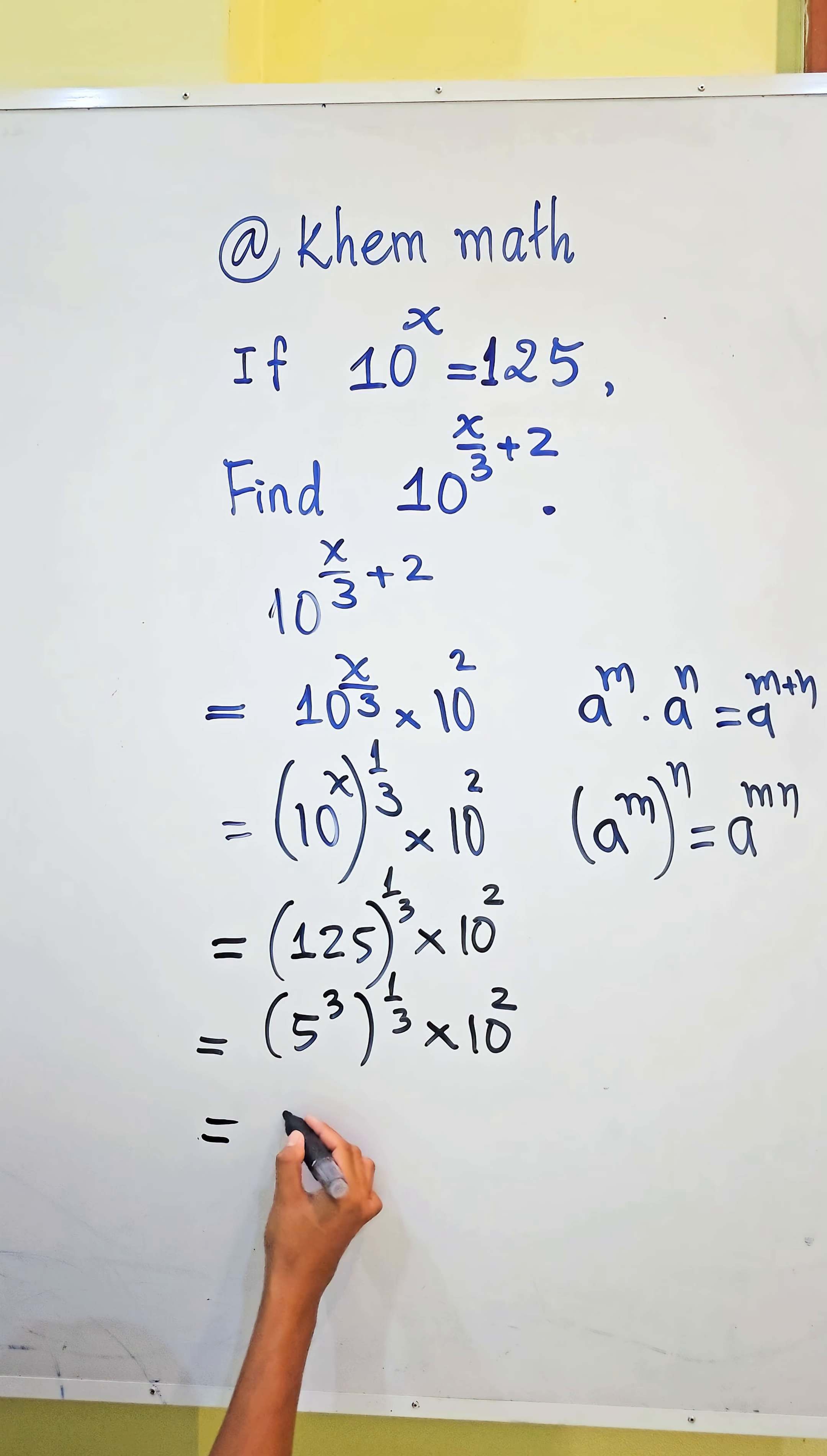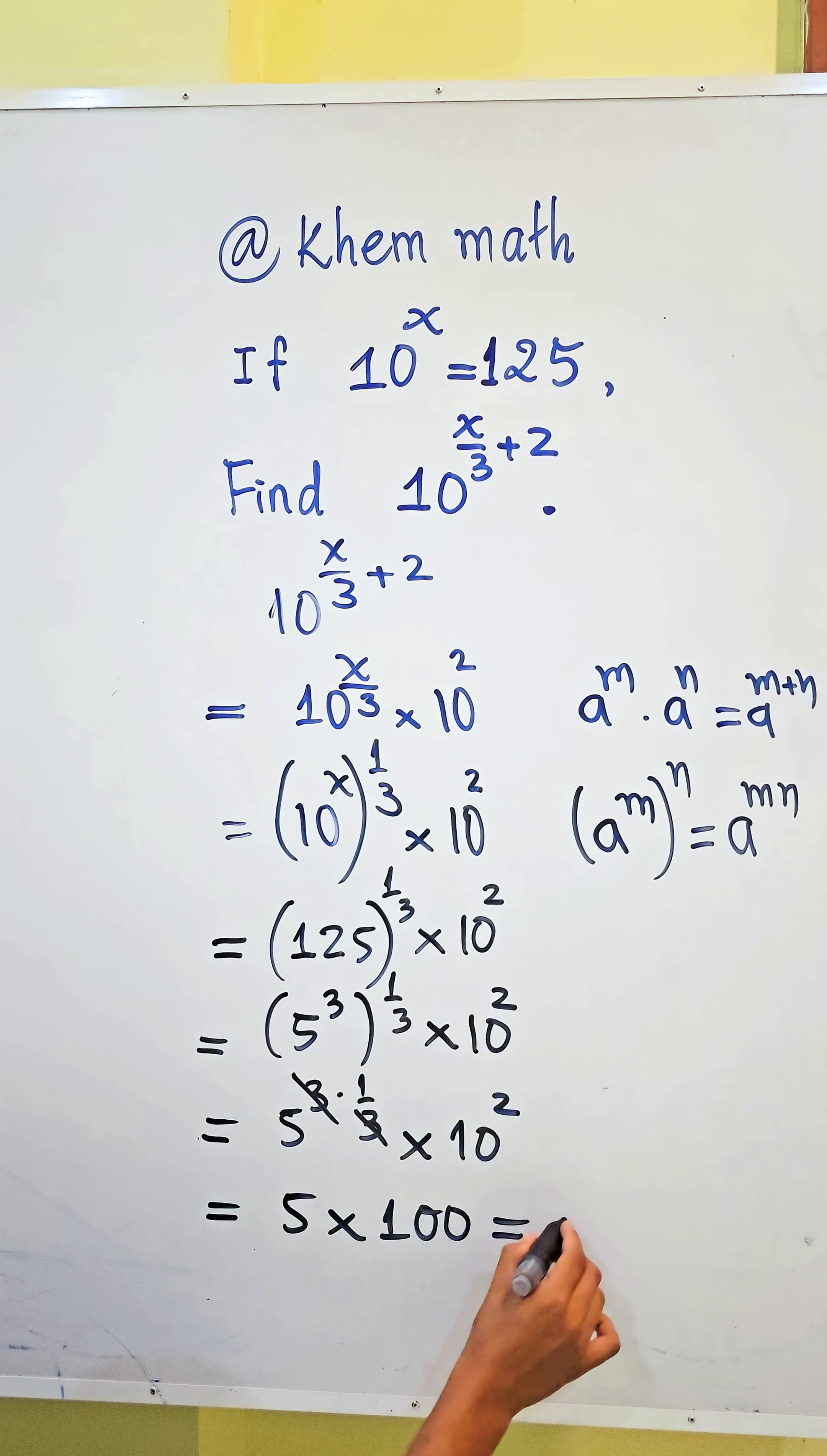We get it's equal to 5 power 3 times 1 divided by 3, times 10 squared. We simplify the 3, we get 5 times 10 squared. 10 squared equals 100, and 5 times 100 equals 500, which is our answer.